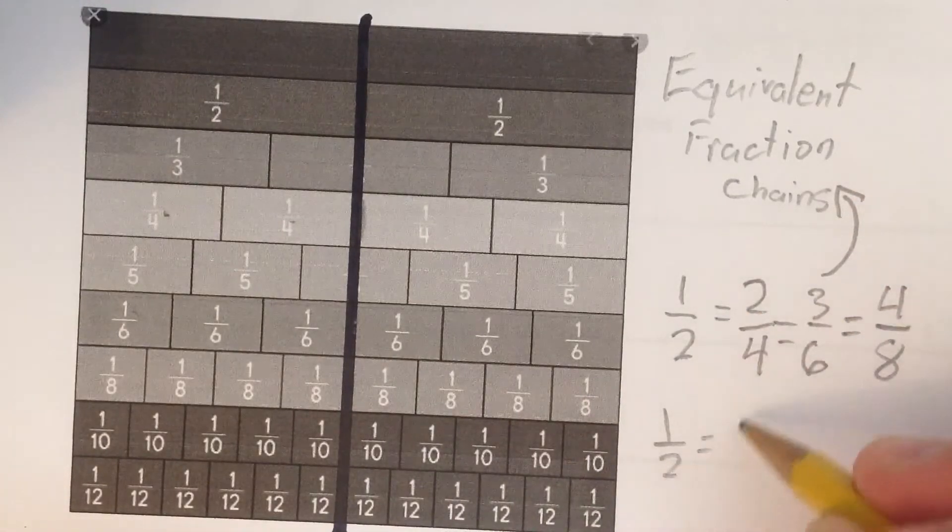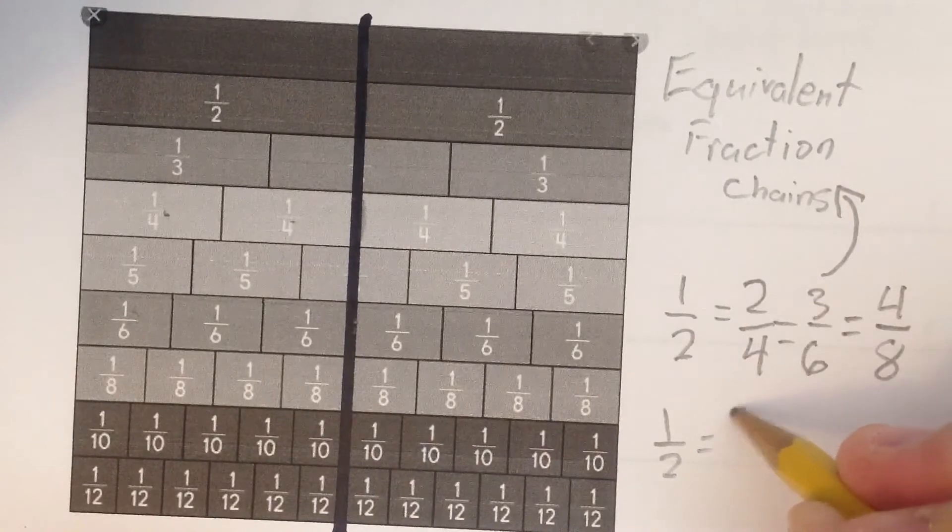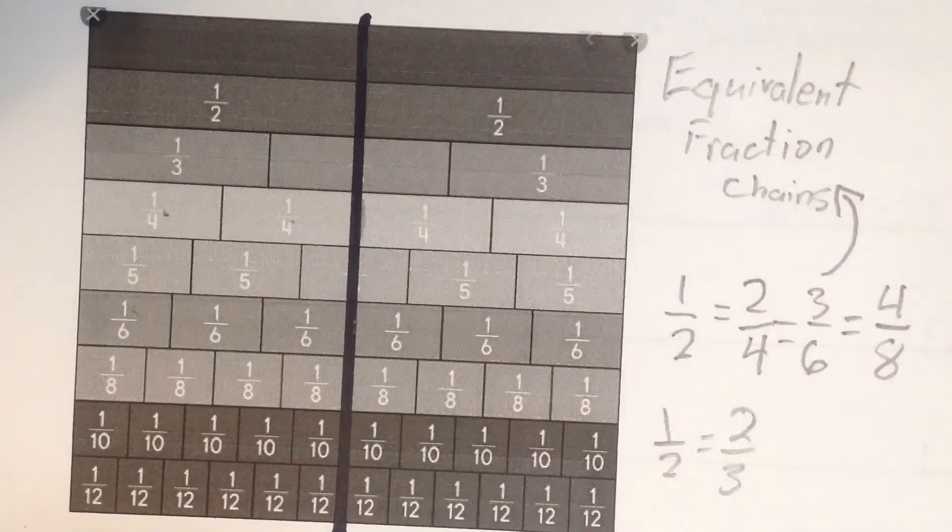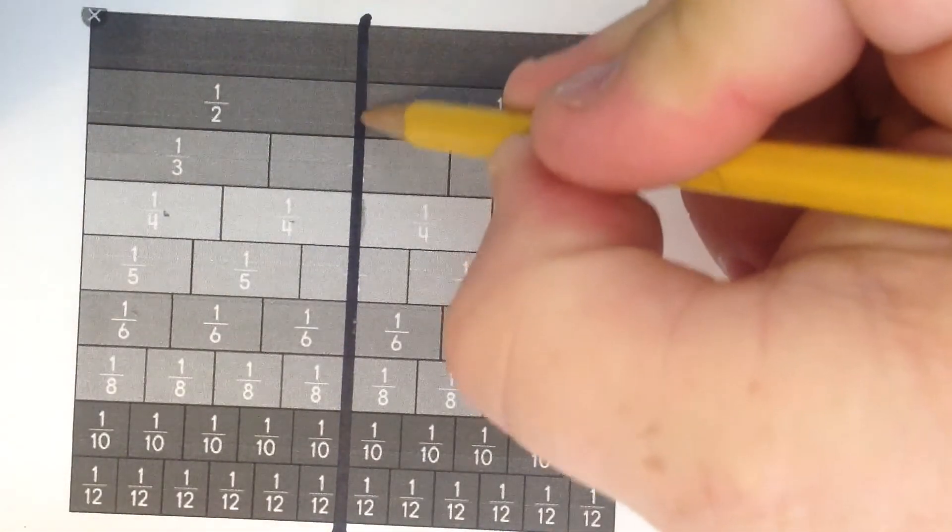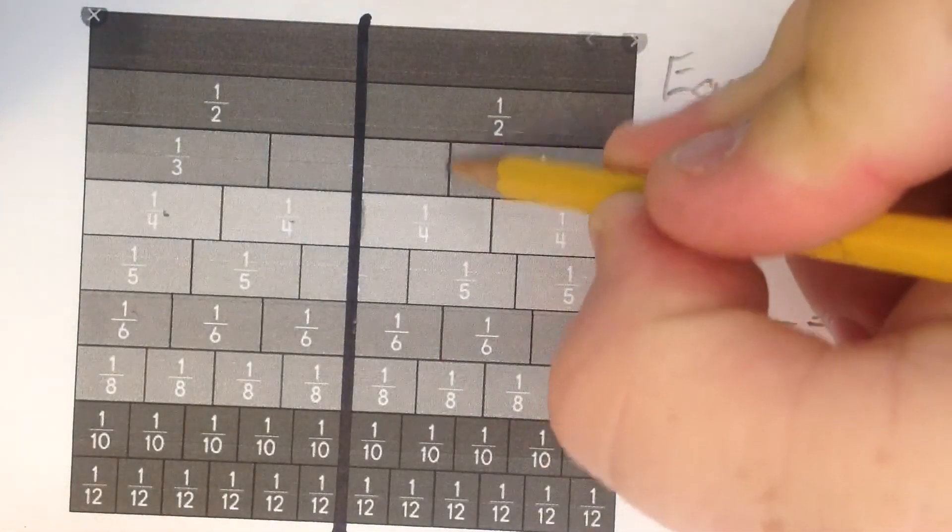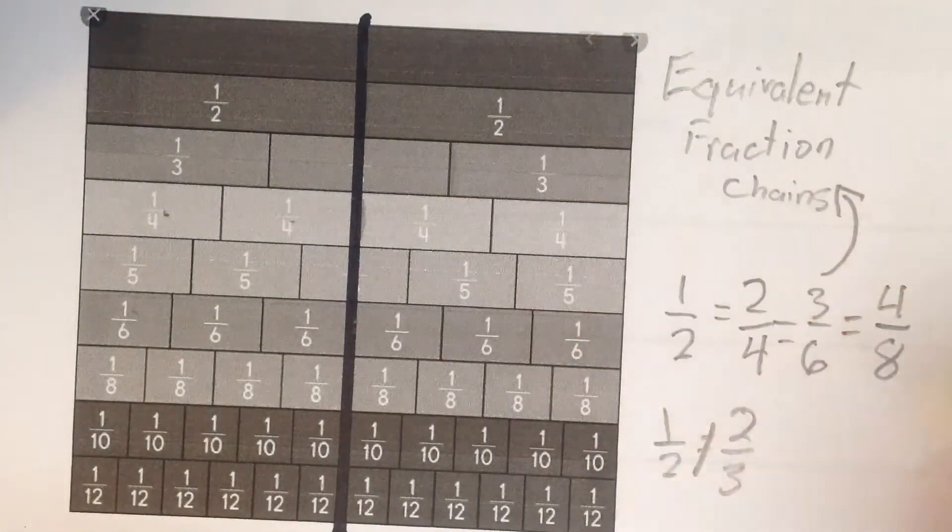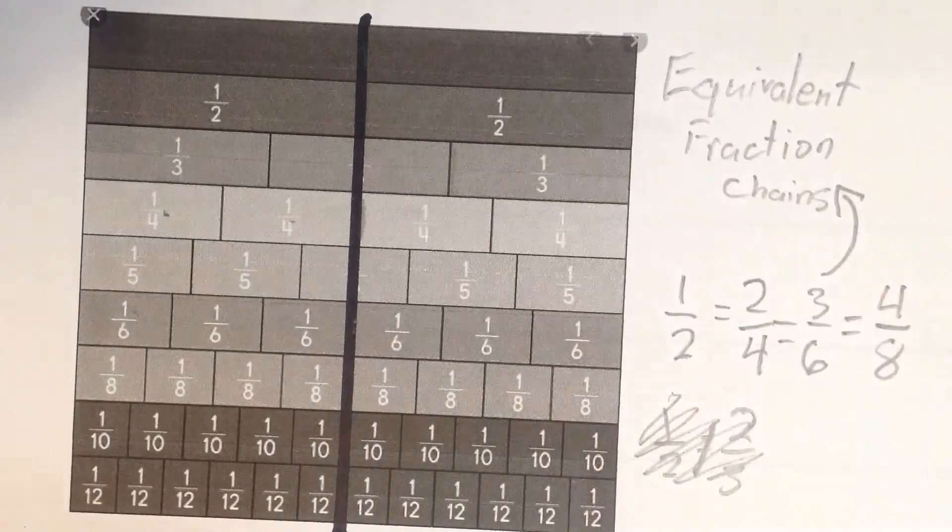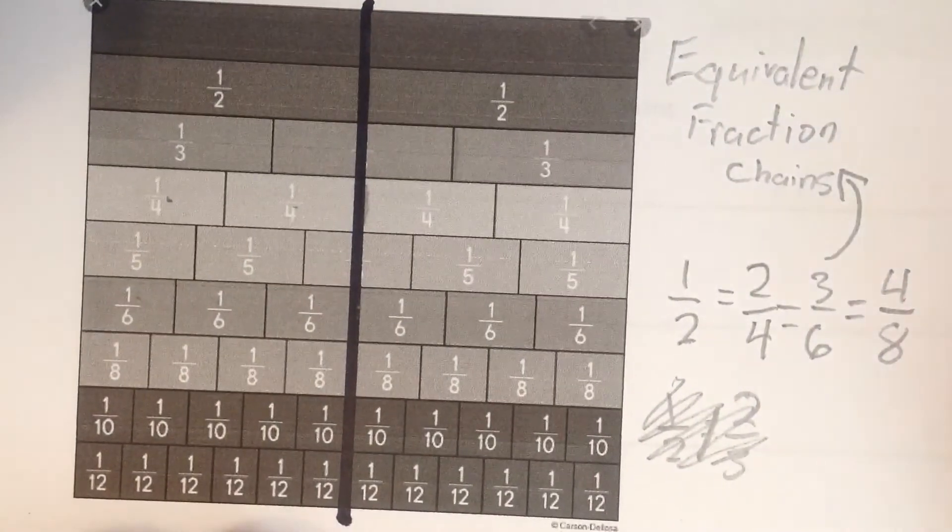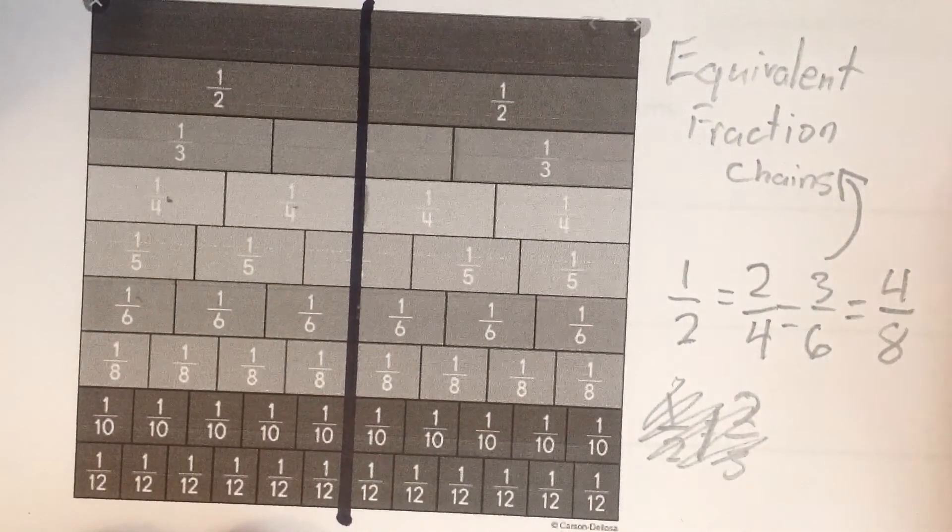Now, I couldn't put that one-half is equal to, like, two-thirds. That doesn't work because one-half ends right here, but two-thirds ends right here. Those are not the same. I'm looking for fractions that are the same.